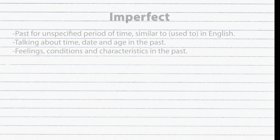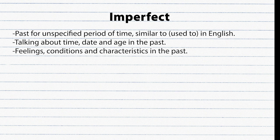The imperfect tense is used to talk about something that was happening in the past for a long or unspecified period of time — very similar to 'used to' in English. It is also used to talk about time, date, and age in the past, as well as feelings, conditions, and characteristics in the past.